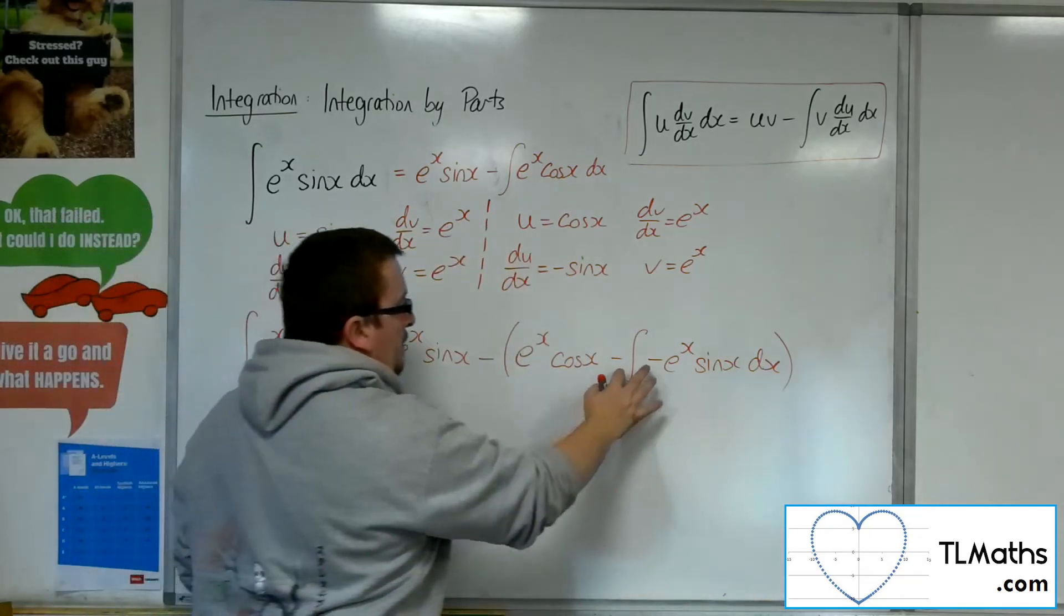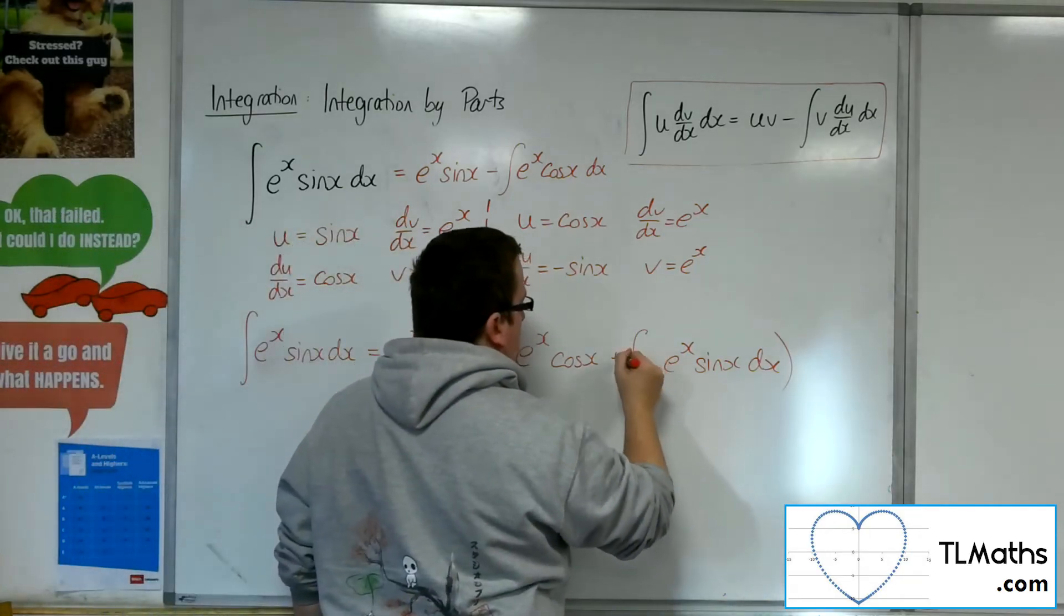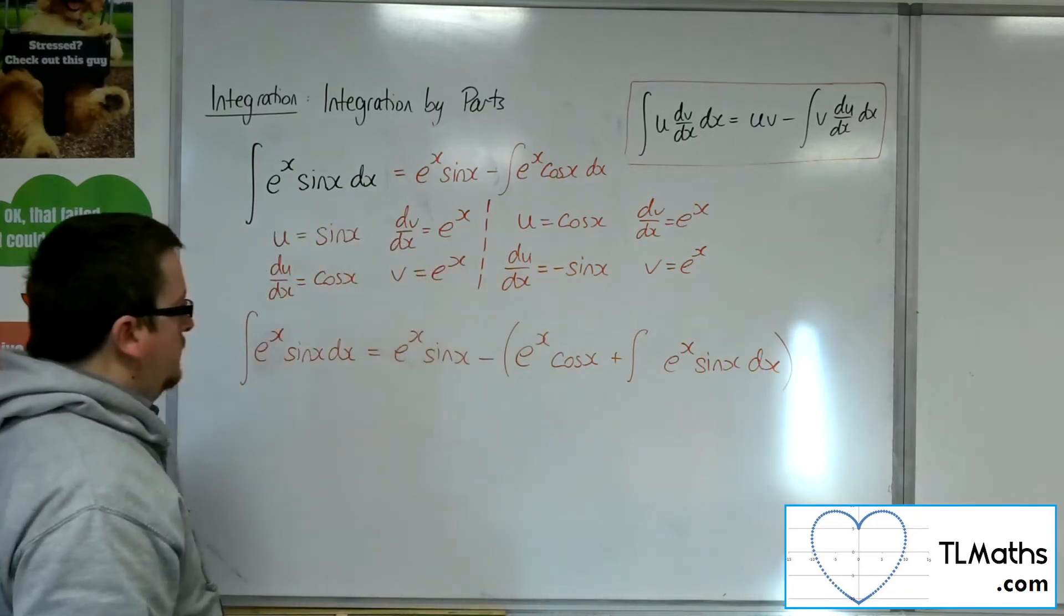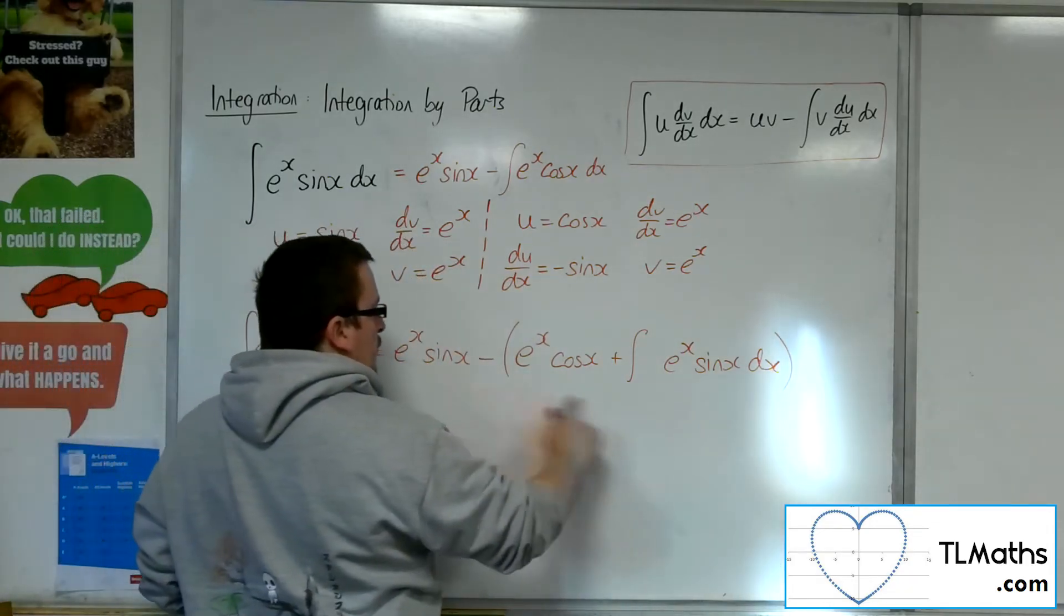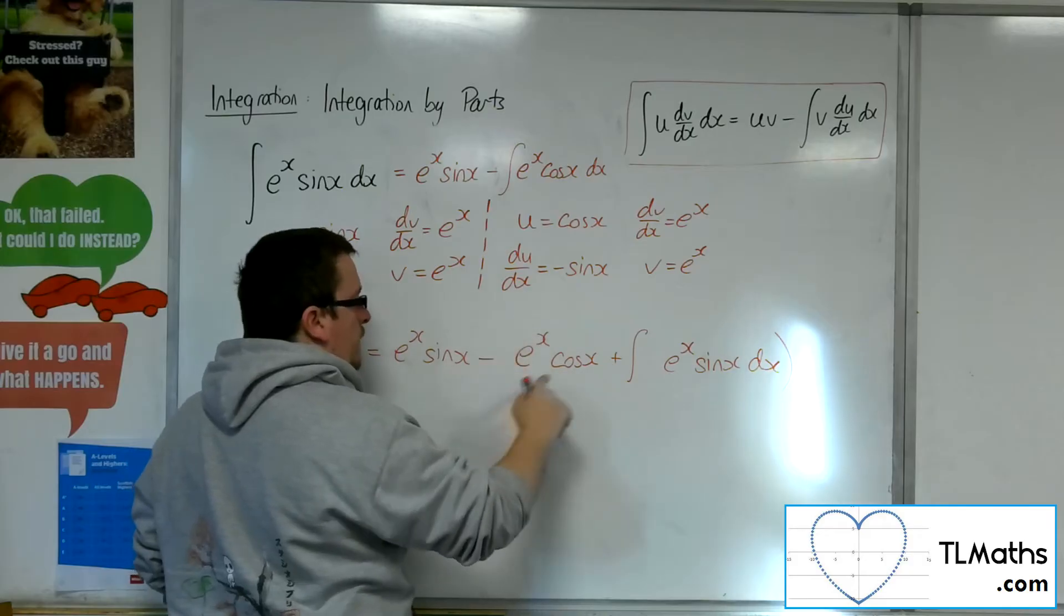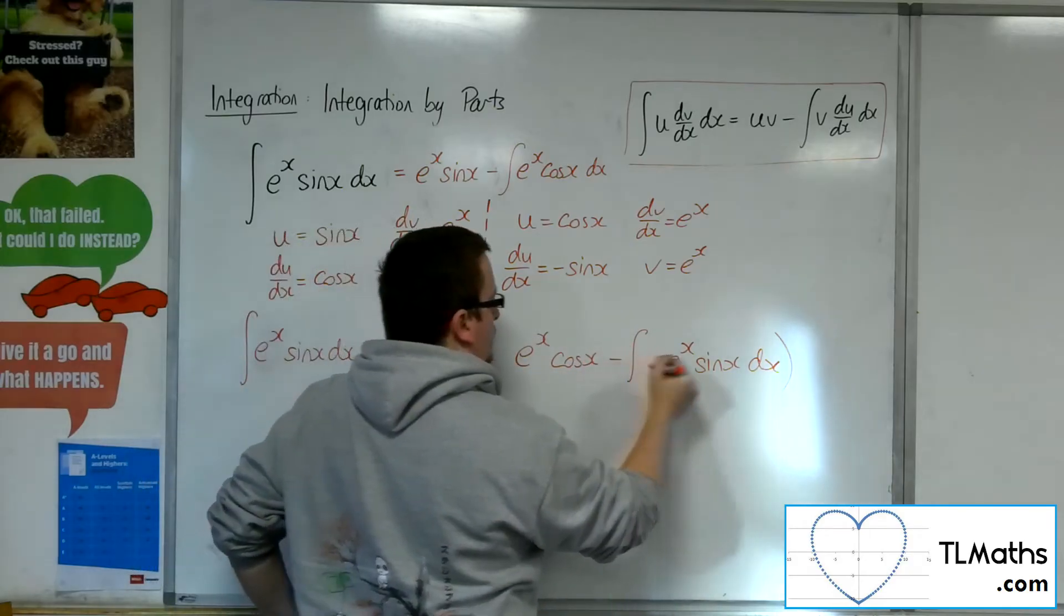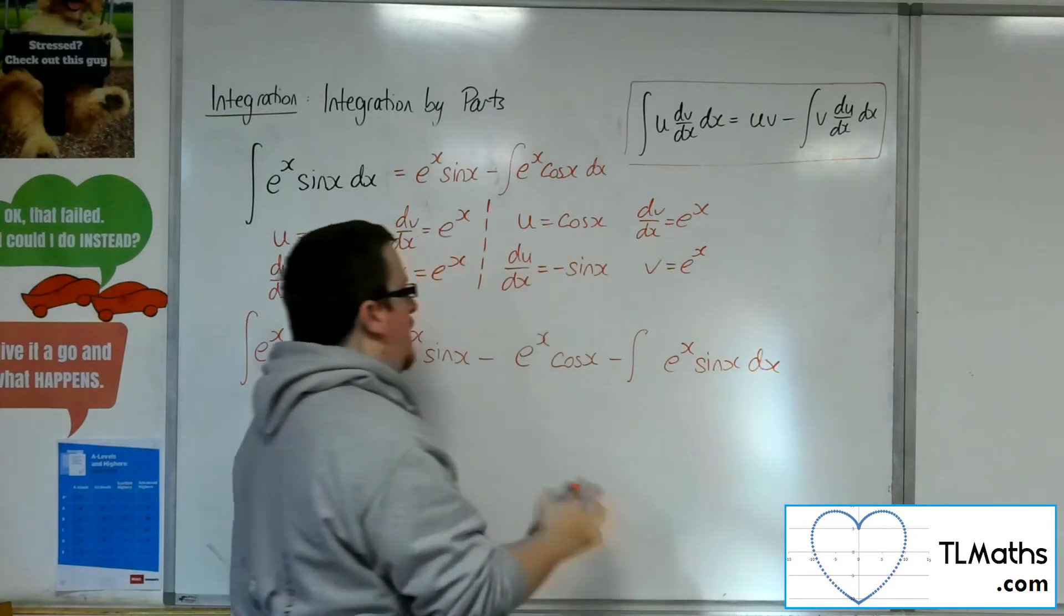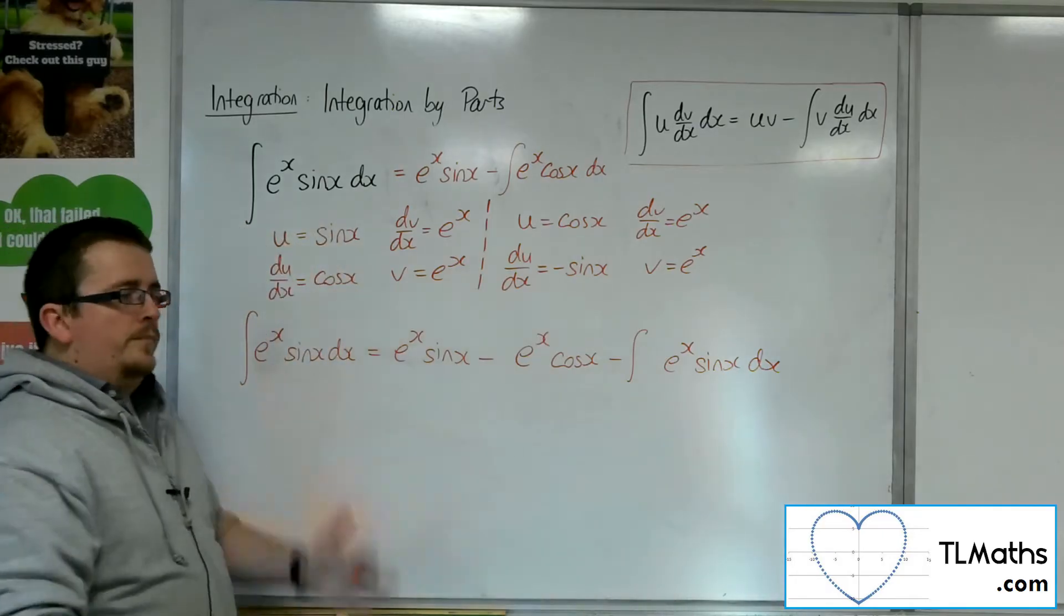Now we've got a minus minus there, so that could become a plus. So if I multiply that minus sine through, I would now have this situation.